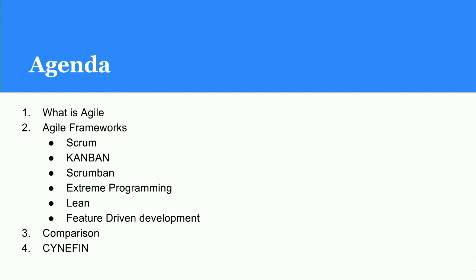Here is the simple agenda of this presentation. We will run you through what agile is — a simple intro, because we know all of you know about agile. Then we will run through agile frameworks: Scrum, Kanban, and Scrumban, which are the three most widely used agile frameworks. We will also discuss extreme programming, lean, and feature-driven development, and see how we can use these for Drupal projects.